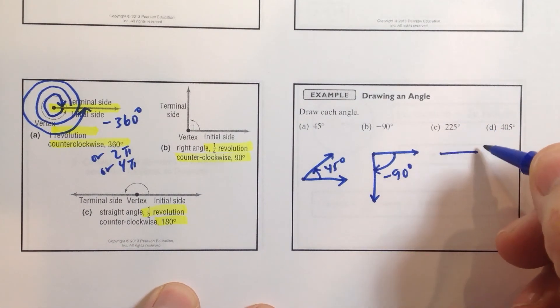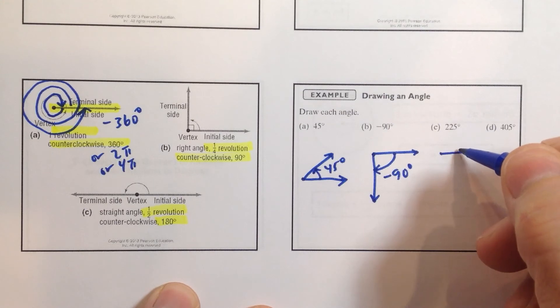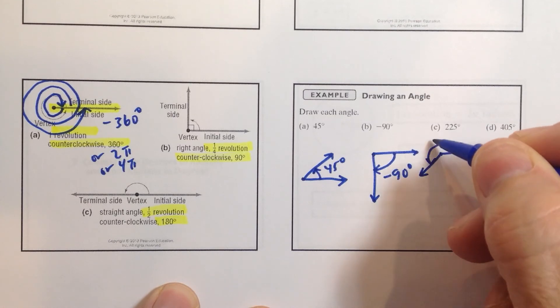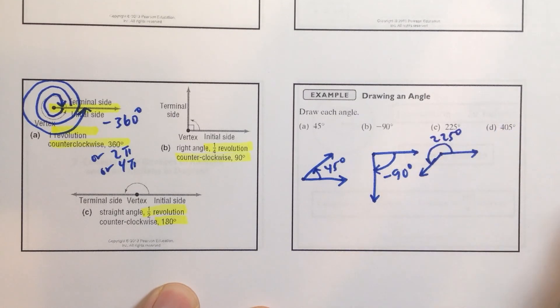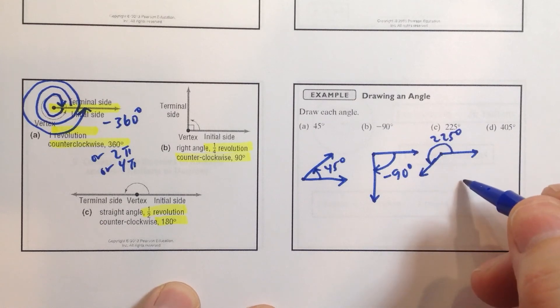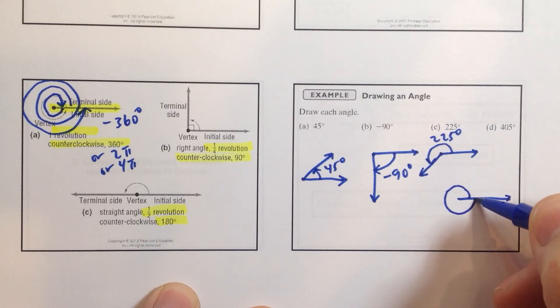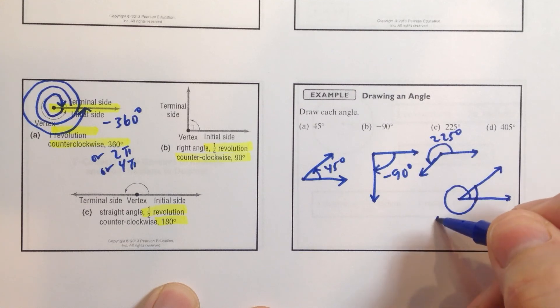225. Well, we start here. And we go 90, 180. 180 and 45 more would be 225 degrees. And then, 405. Let's try that one. Start with our initial side. We go 405. So, that's 360 right there. And 45 more brings us to 405. So, we just write 405 degrees.